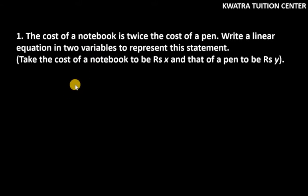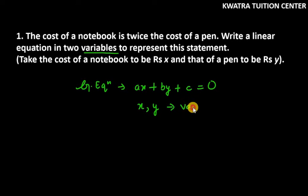What do we need to do here? We need to get a linear equation which has two variables. First of all, I will tell you what is a general linear equation in two variables. It is ax plus by plus c equals zero. Here we have two variables, x and y.